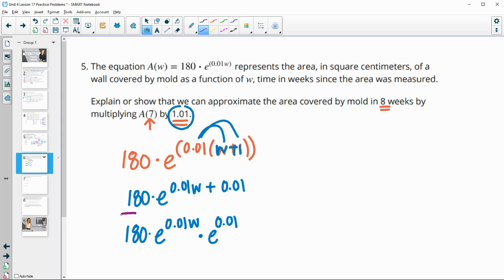And what this allows me to do is say, here's the original equation. So here's the original 180 E to the 0.01 W. And then the next year would just be this many times bigger, this factor. It's this much bigger than the previous one. And if you type E to the 0.01 in your calculator, you get an approximate decimal of 1.01. So an approximate growth factor from the previous week of 1.01.